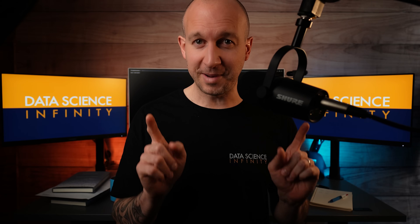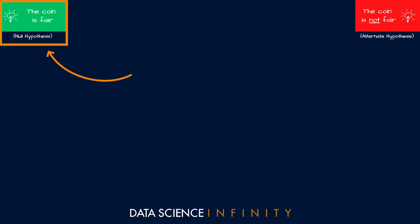I don't want to accuse Pete of skullduggery unless I have a good amount of evidence to back that up. So here is my plan: as we're mates, I'm going to give Pete the benefit of the doubt and start by assuming the null hypothesis is true — that the coin is fair. By doing this, I'm also assuming that Pete's coin will behave the way a fair coin should.